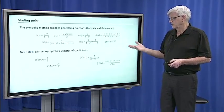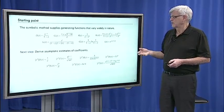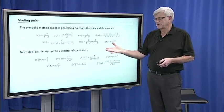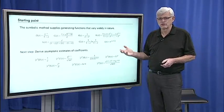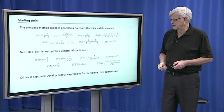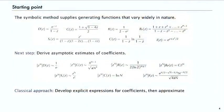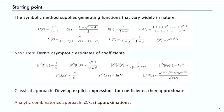During the second part of the course, for all of these functions, we are able to automatically extract these kinds of asymptotic estimates. The classical approach is to take the generating functions and derive an explicit expression and then use asymptotic techniques to develop an approximation. But with analytic combinatorics, what we're going to do is directly derive the approximations.